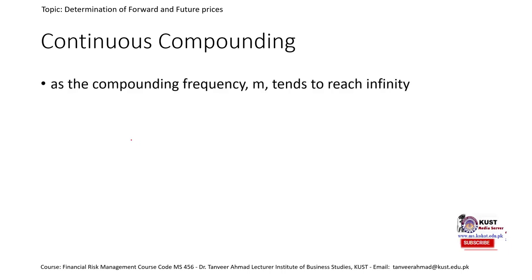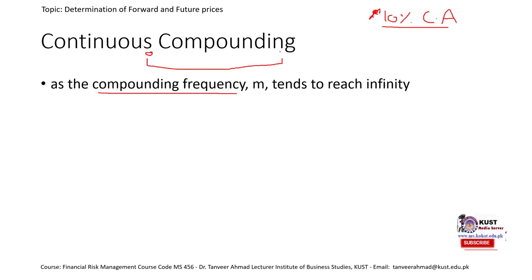Starting with the concept of continuous compounding, we first need to understand compounding frequency — how many times interest is compounded annually. For example, if we say interest is 10% compounded annually, that simply means this 10% is paid once a year. If we draw a timeline, this is today and this is after one year — so this 10% is paid after one year on our deposits. If we say the interest is 10% annual but compounded semi-annually, that means interest is paid once after six months.